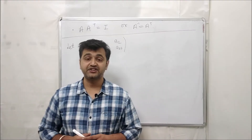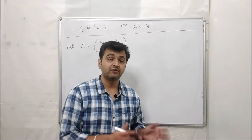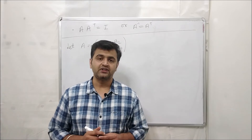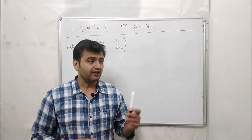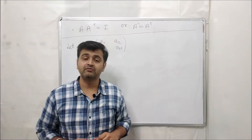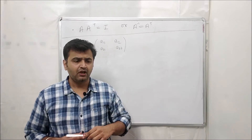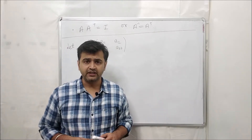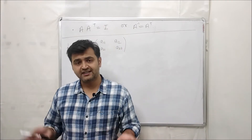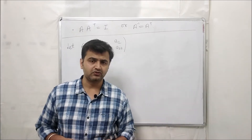In my last lecture I talked about orthogonal matrices and some of their properties. After seeing that lecture, some of my students asked: why are matrices satisfying this condition called orthogonal matrices? Their question was obvious, because what they had studied about orthogonality is that when two vectors have their dot product zero, you call those two vectors orthogonal — but I didn't talk about dot product being zero.